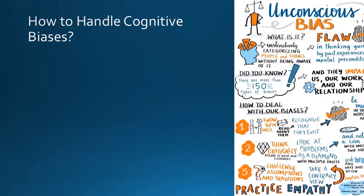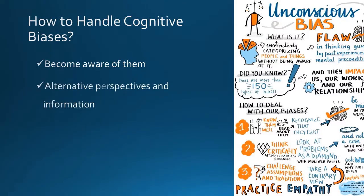How to handle cognitive biases? One way to handle cognitive biases is to become aware of them. By recognizing these biases, we can become more aware of our own thinking and decision-making processes. We can also try to seek out alternative perspectives and information that challenge our existing beliefs. It is also important to approach decisions with a rational and logical mindset rather than relying solely on emotion or intuition.